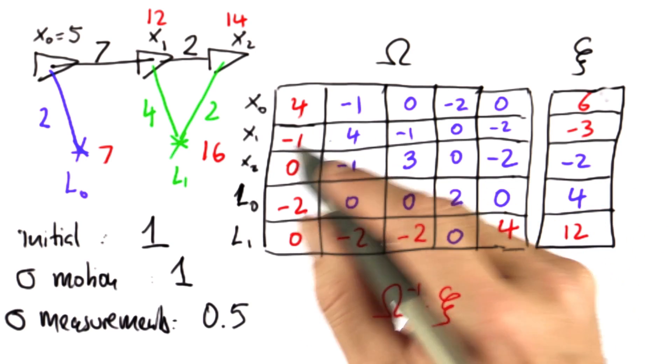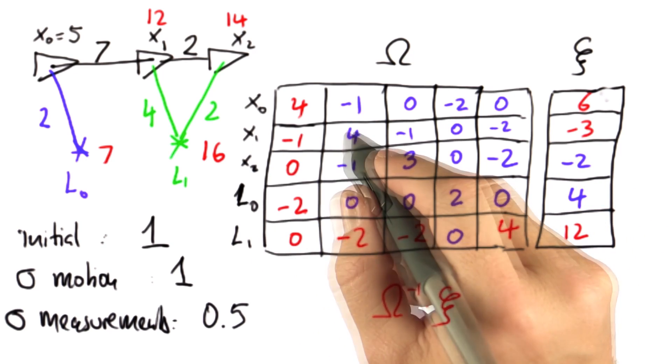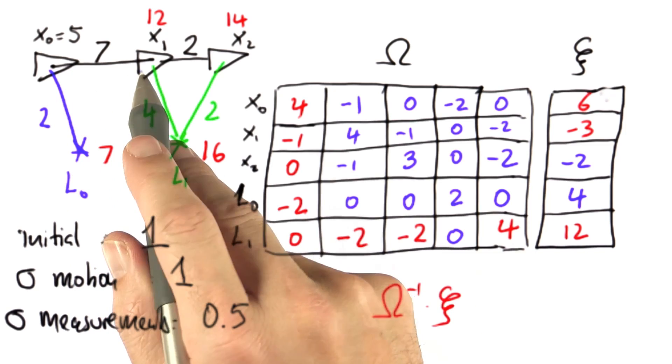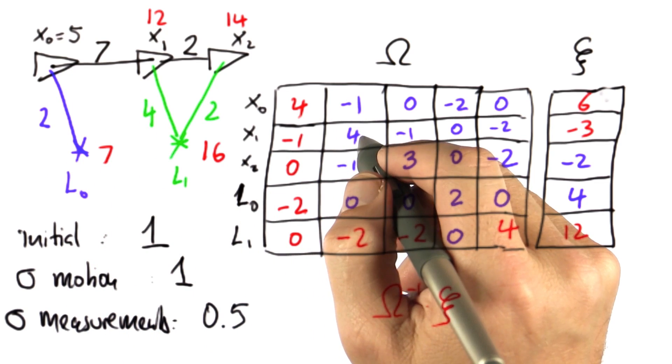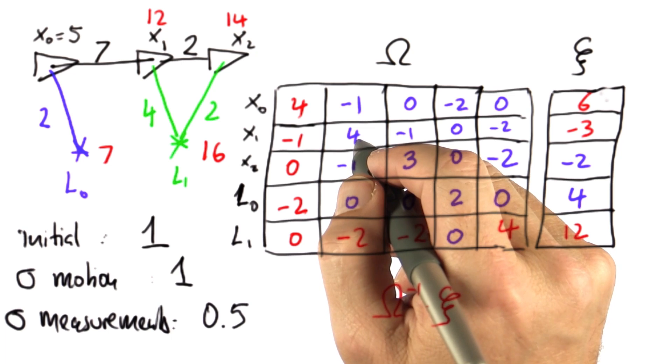For example, let's take the elements related to x1. We moved from x0 to x1, which added one in the main diagonal. We moved from x1 to x2, which added another one, so we have two.